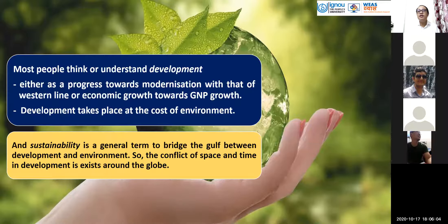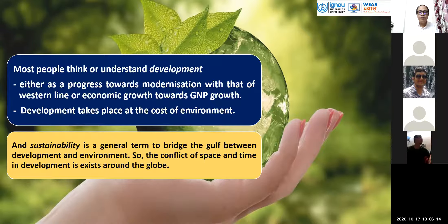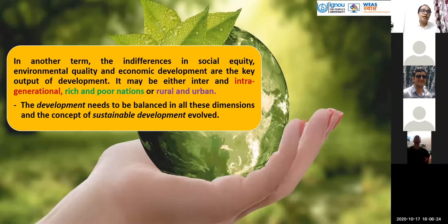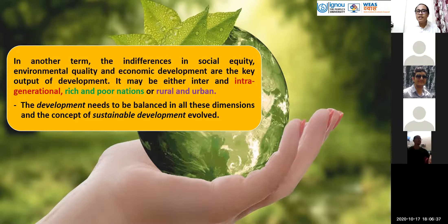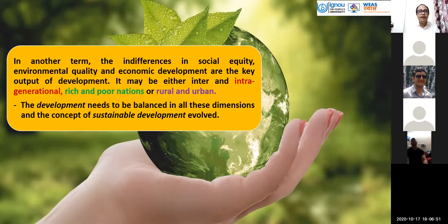The conflict of space, time, and development exists around the globe. In developing countries and developed countries alike, we know development comes at the cost of the environment, yet we continue. Development needs to be understood in terms of social equity, environment quality, and economic development — including inter- and intra-generational issues. Looking at rich and poor nations, African countries, India, Asian countries, European countries, rural and urban differences — especially highlighted in this global pandemic, COVID-19 — development needs to be balanced in all these dimensions. This is how the concept of sustainable development evolves.